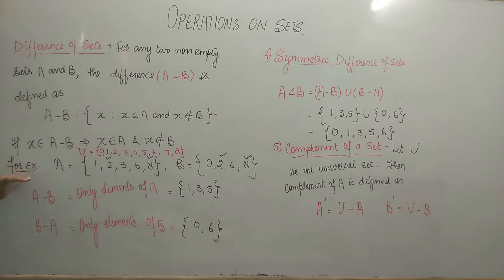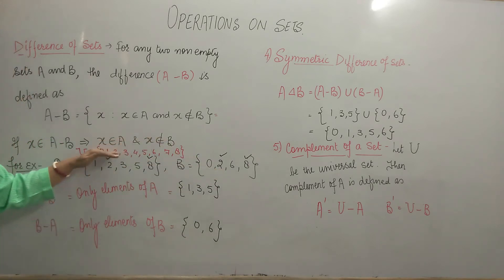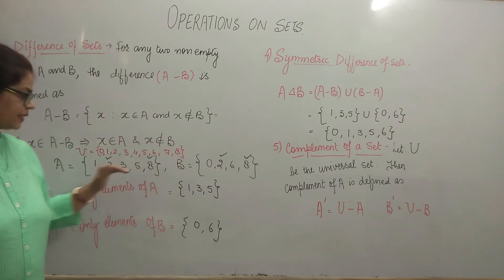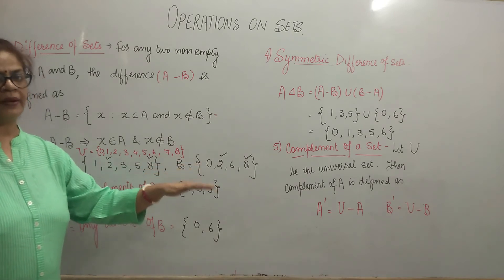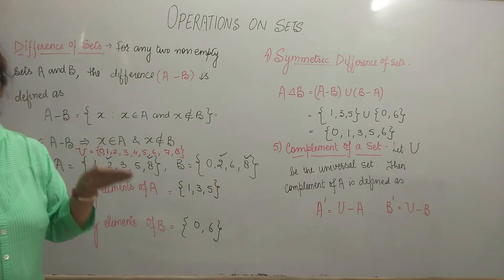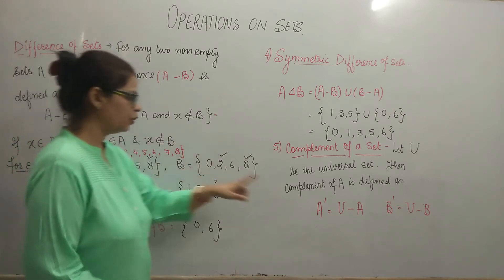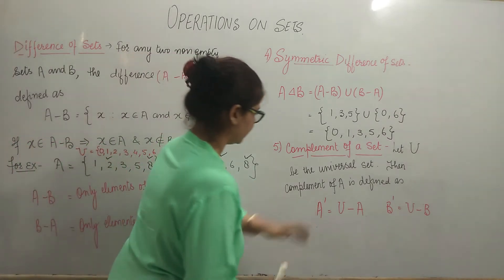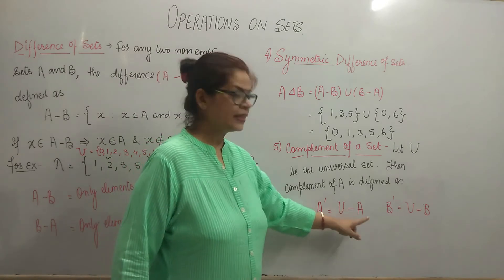The question we have taken had set A and set B. So universal set is the superset of A and B. Set A or set B ke paas koi bhi element aise nahi ho sakte jo universal set ke paas na ho. Now let us find out A complement. A complement, as you can see, is U minus A.